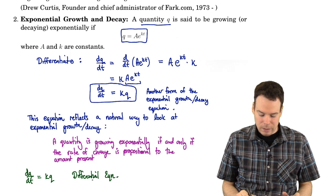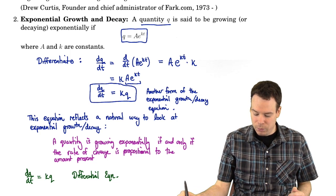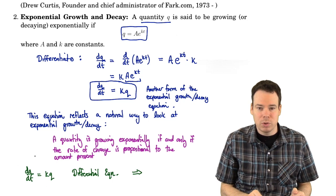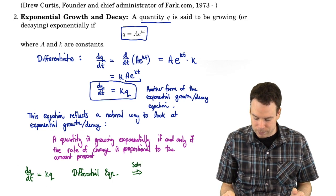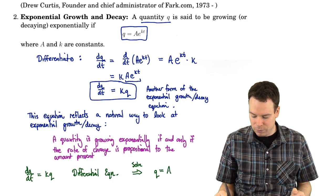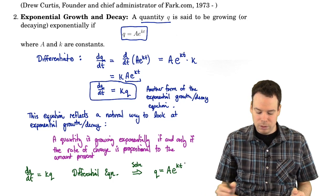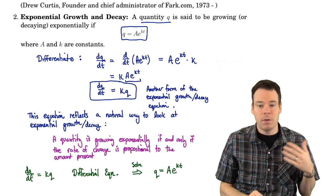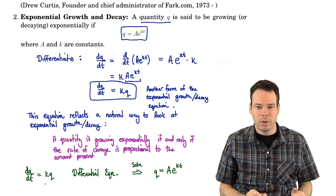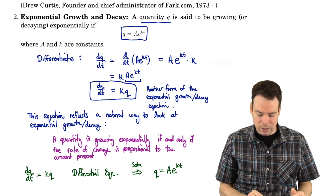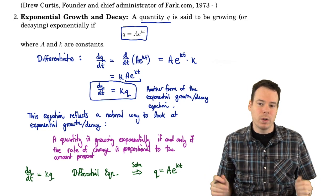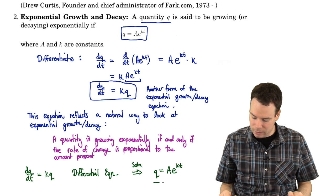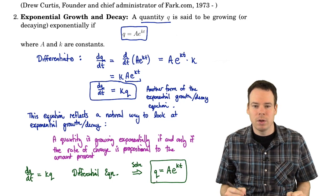So our goal is to say: for this differential equation, can we find a solution? And in fact we already have one, because we reverse-engineered it. The idea is that Q growing exponentially gives us a solution: Q has to be an exponential function of the form Ae to the KT. A differential equation is an equation involving a function and its derivative — or possibly higher-order derivatives. This one is called a first-order differential equation because it involves only the first derivative. The solution is the exponential function of this form.